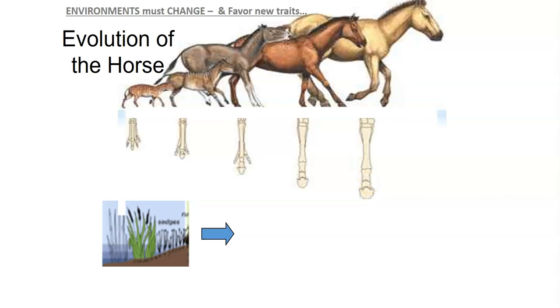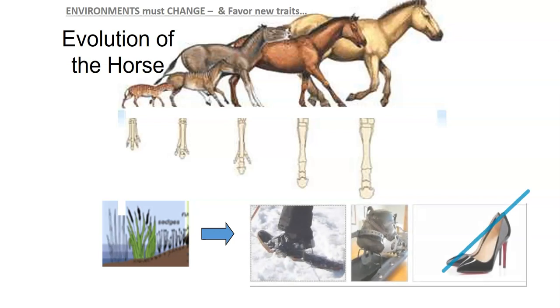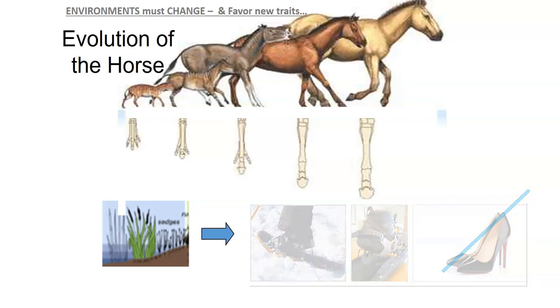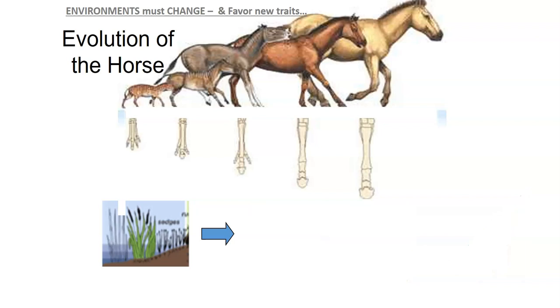The fingers did serve a purpose. If you were born and you had fingers, it allowed you, kind of like think about it like a snowshoe, it kind of allowed you to disperse your weight and stay above the mud. It was easier to survive in that environment to get around. If you were born without those fingers, you probably got stuck quite a bit and you were slow and you were eaten, so it didn't serve you a very good purpose.